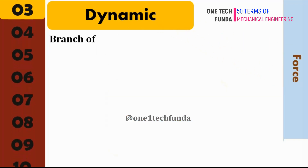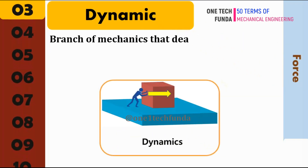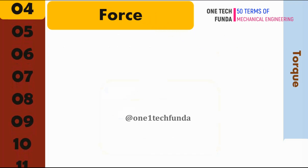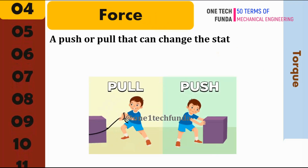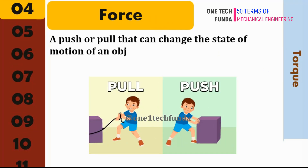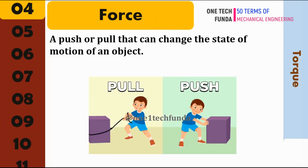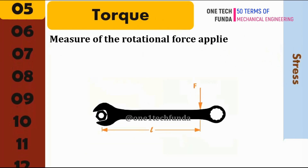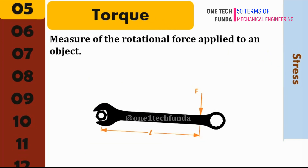Dynamics: the branch of mechanics that deals with the study of forces and their effects on objects in motion. Force: a push or pull that can change the state of motion of an object. Torque: a measure of the rotational force applied to an object.